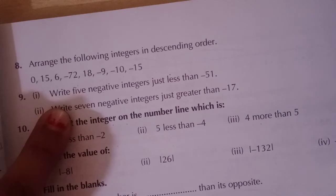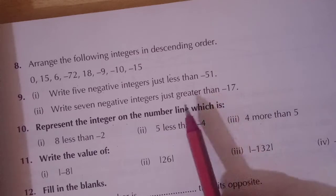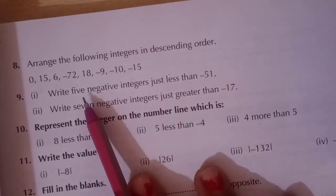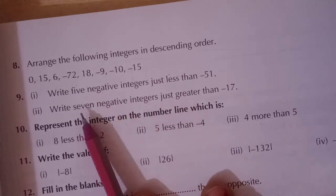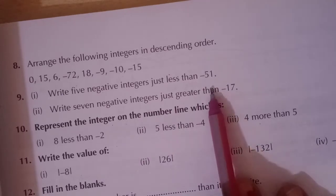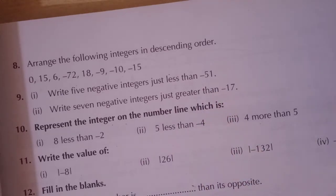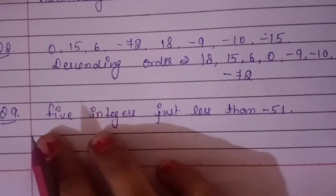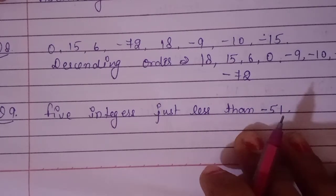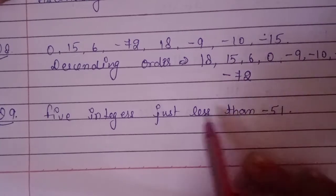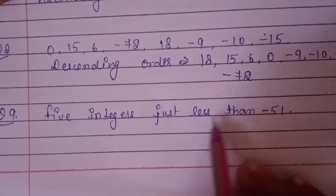Write 5 negative integers just less than minus 51. Just less than minus 51, we are going to write down 5 negative integers. The next part is: write 7 negative integers just greater than minus 17. These are the two questions. Now let's see how we will solve them.